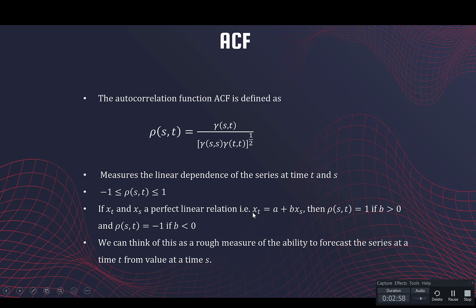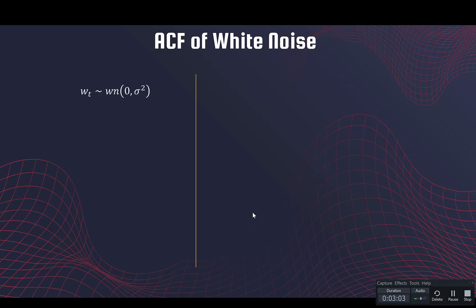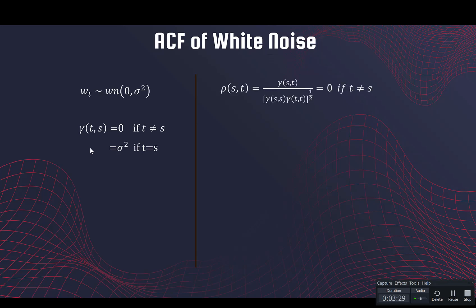Let's take a look at the autocorrelation function for white noise. w_t is white noise, and if you remember, this is the autocovariance function. It's a good idea to know the autocovariance of basic structures like the moving average, the autoregressive, and definitely the white noise. For the autocorrelation: rho(s,t) is the autocovariance divided by the standard deviation. If t is not equal to s, this is zero, so the autocorrelation is also zero; if t equals s, it is one.